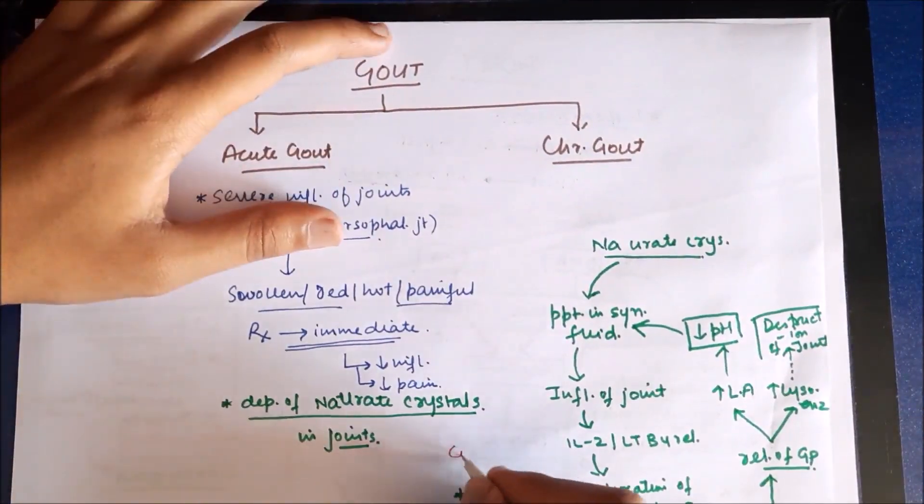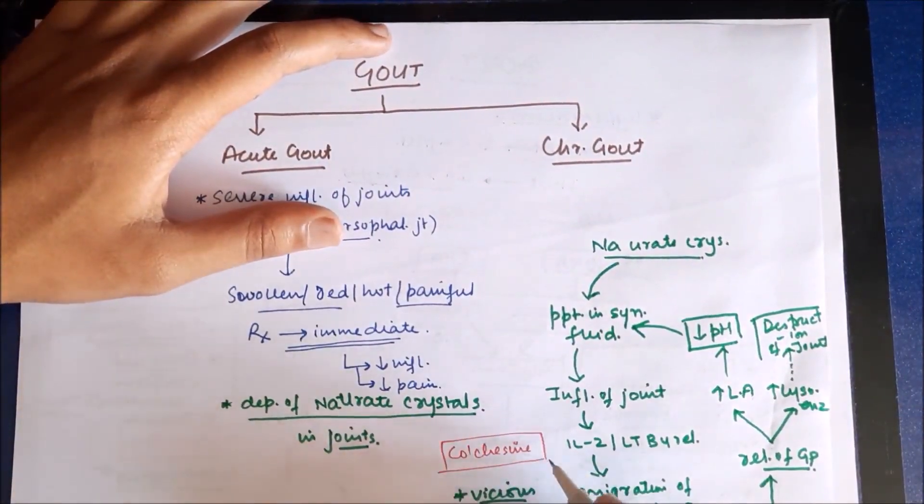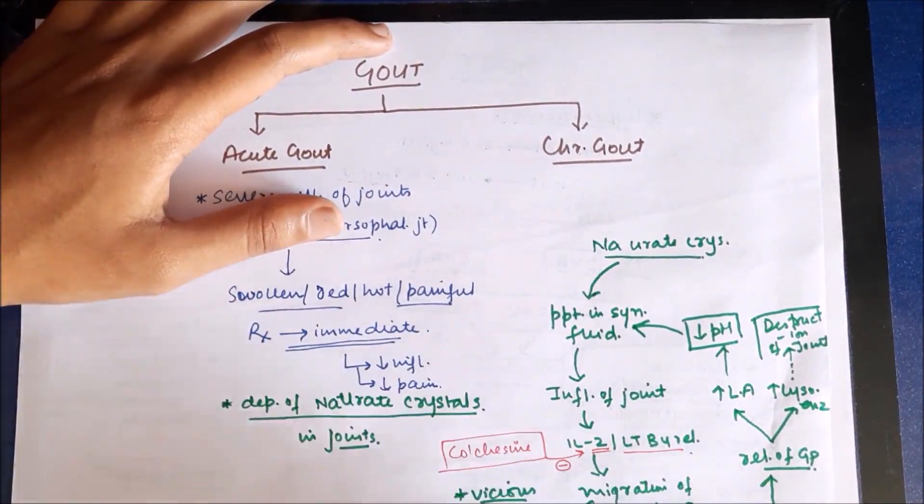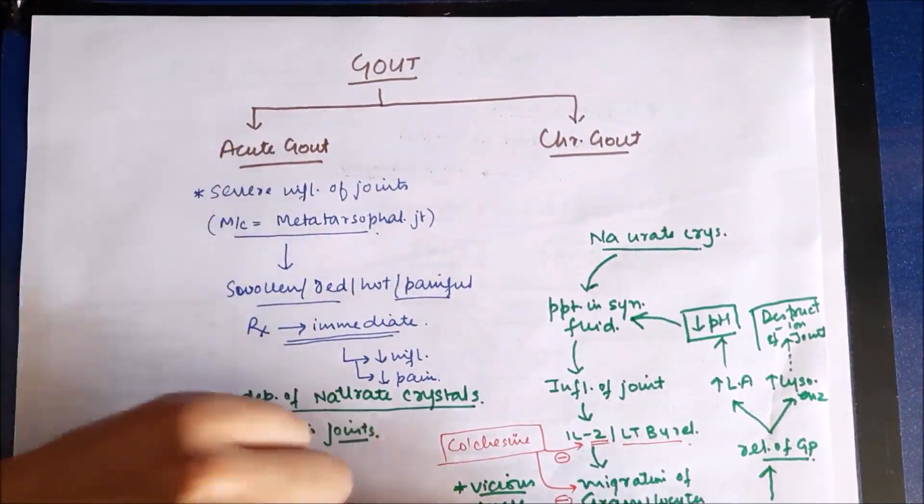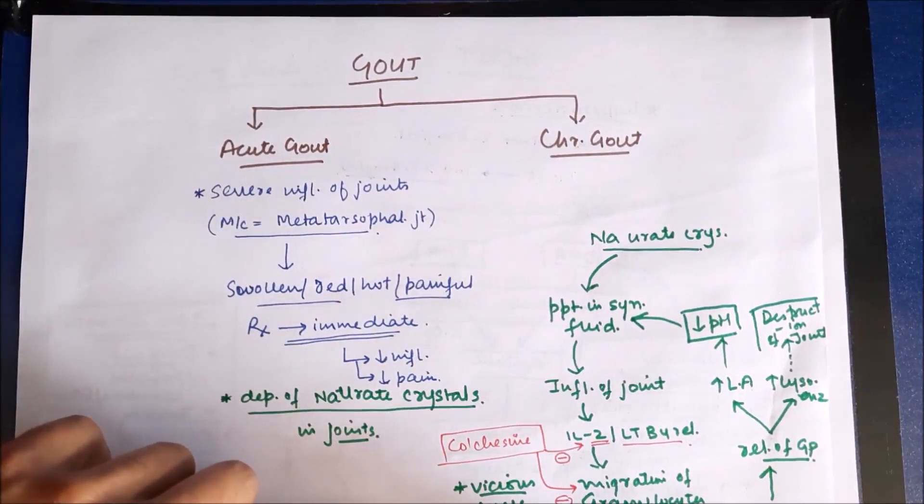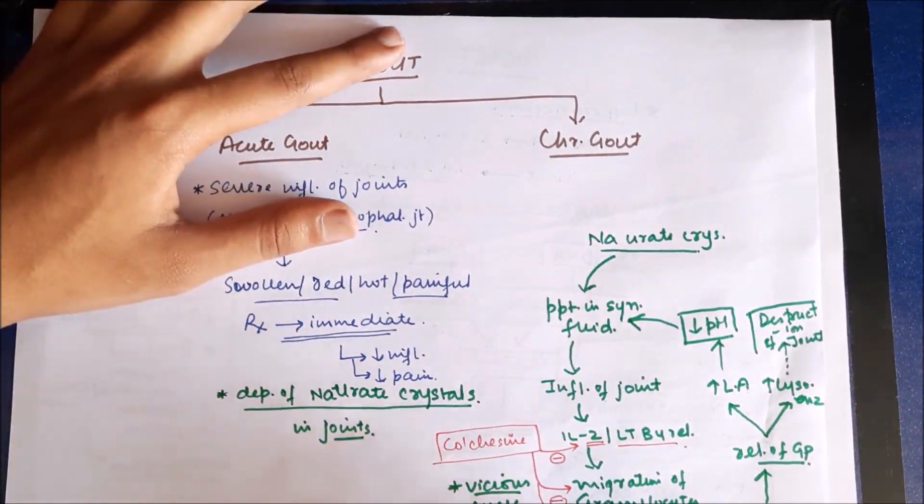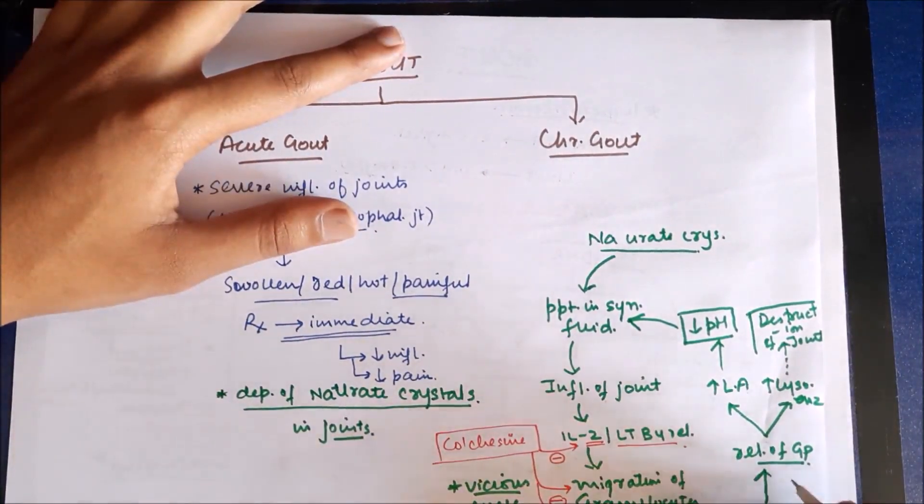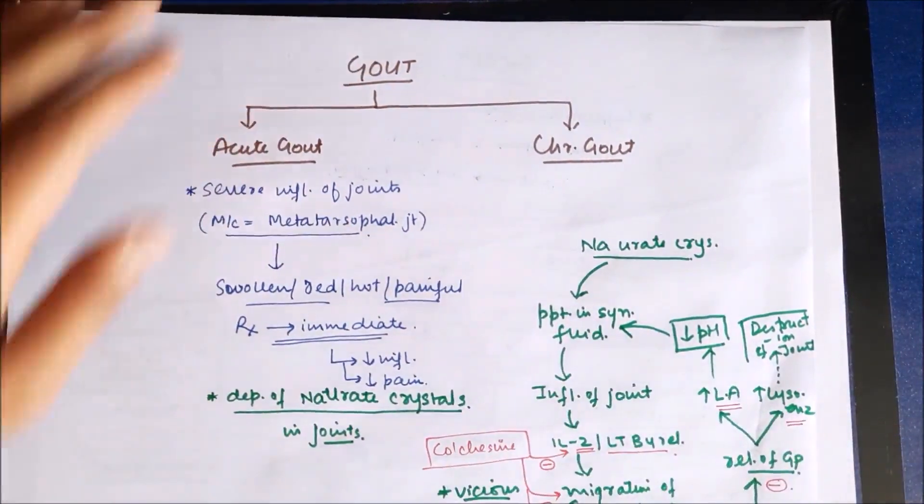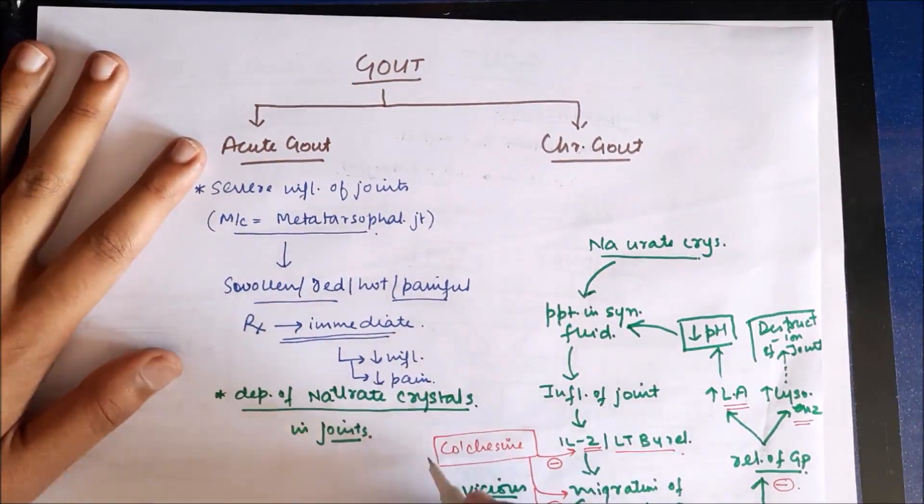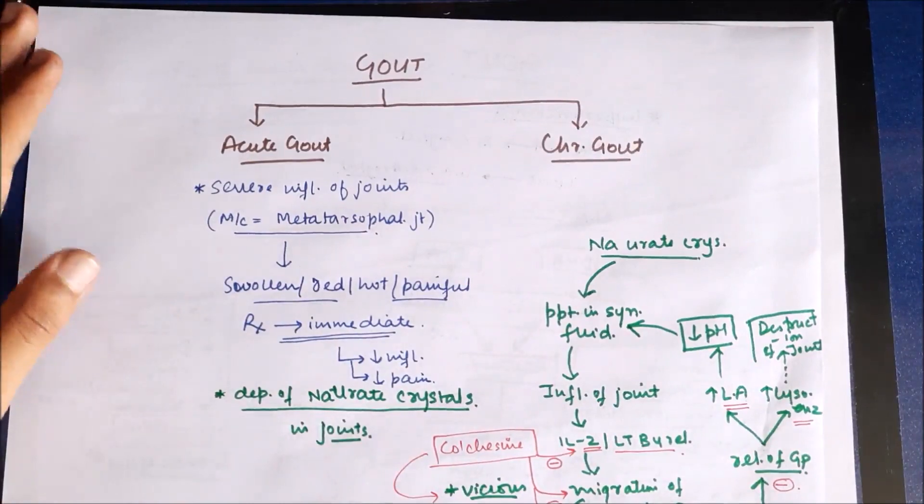To understand the mechanism of action, we take a look at that vicious cycle. Colchicine inhibits the release of chemotactic substances such as interleukin-2 and leukotriene B4, and it also inhibits migration of granulocytes, that's chemotaxis, by inhibiting microtubules, which are actually contractile proteins. It also inhibits phagocytosis by these granulocytes and the release of glycoprotein. Therefore, it is very effective in preventing the development of vicious cycle in acute attack of gout.